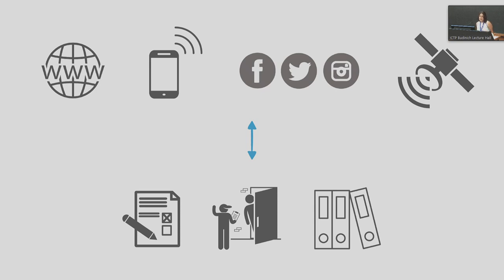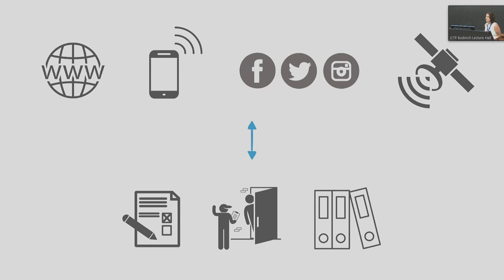The broader context of my talk is the realization, over the last 15 years or so, that a lot of the new data we are producing daily — using our phones, the internet, and satellite imagery — can be used beyond their original scope. Researchers and international organizations have started using this data as proxies to measure socioeconomic indicators.